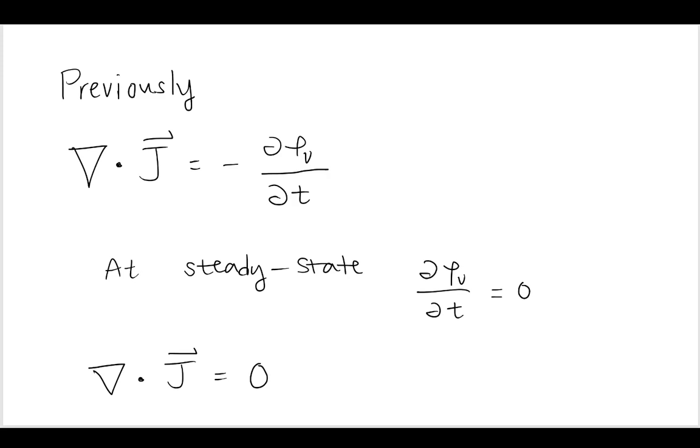So in the previous video we derived this relationship using a cube that looks something like this, and we said the cube was full of charges. The charges were leaving with some current density like this, and we had a bunch of currents leaving it, and we derived this continuity relationship which said the divergence of the current density is equal to the negative change of the charge density with respect to time.